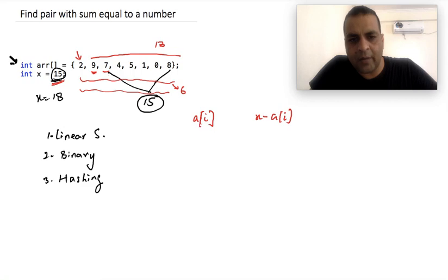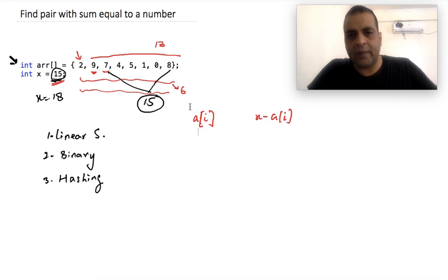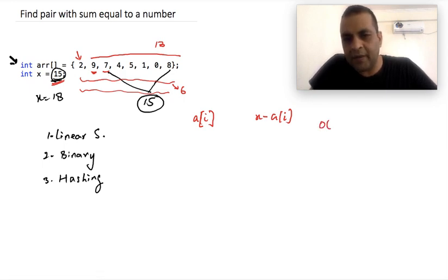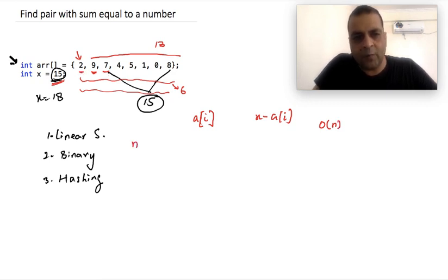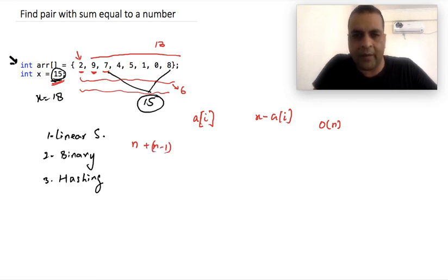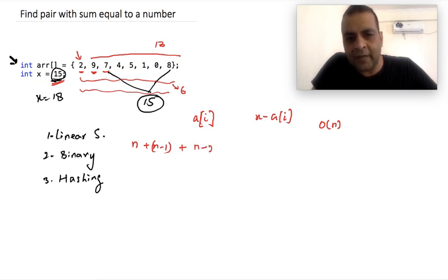Because nothing is given about the nature of elements in the array, we cannot just use binary search. If we try to use linear search, then searching for x minus arr[i] takes O(n) time. For the first element we take n time, for the second element we search an array of size n minus 1, for the third element n minus 2, for the fourth element n minus 3, and so on.